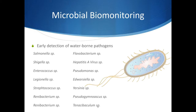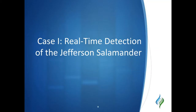Likewise, E. coli testing can be done on-site at public beaches, enabling a much faster response to outbreaks. Vector-borne diseases can also be detected by capture of the host and subsequent DNA extraction from vector tissue. For example, we can detect tick-borne pathogens causing Lyme disease, such as Borrelia burgdorferi. At this point, I will hand over proceedings to Kevin.